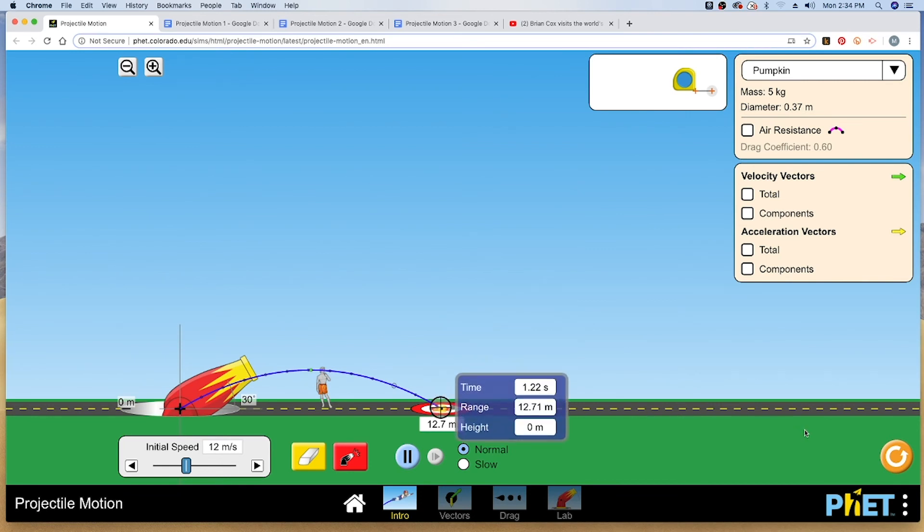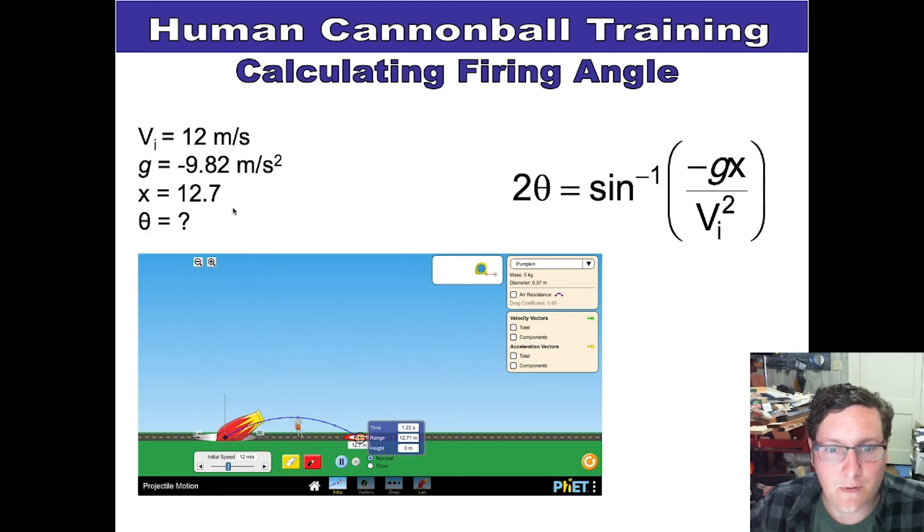So the known x value, 12.7, is equivalent, effectively, to 12.71. So again, when you're dealing with calculations and the simulator, and you guys will be using the simulator in the assignments attached to this, be aware that there will be some rounding variations, but they should not be too significant. It's why I usually have you guys try and solve to two decimal places. In this case, we know that's effectively getting rounded off to whatever that one decimal point is.